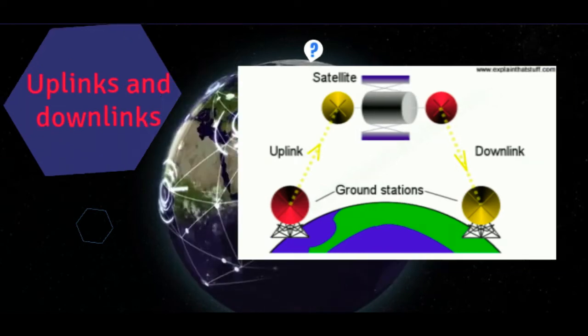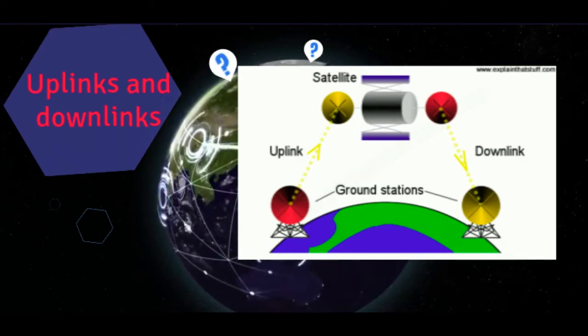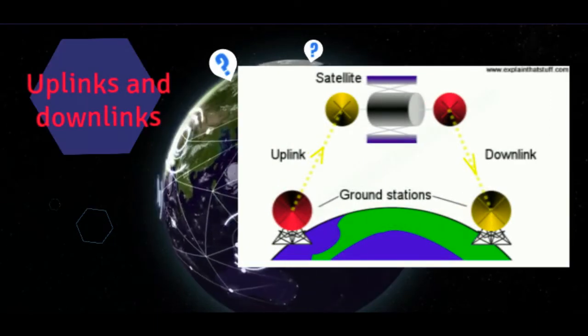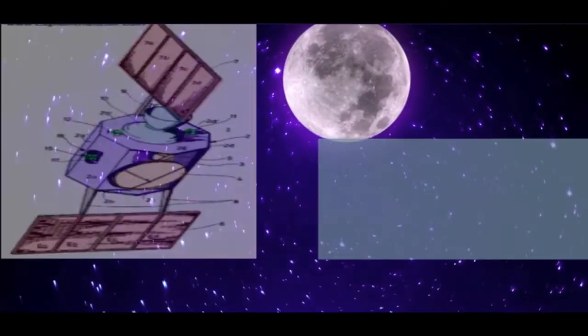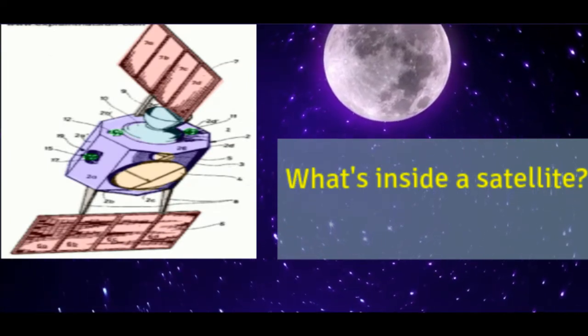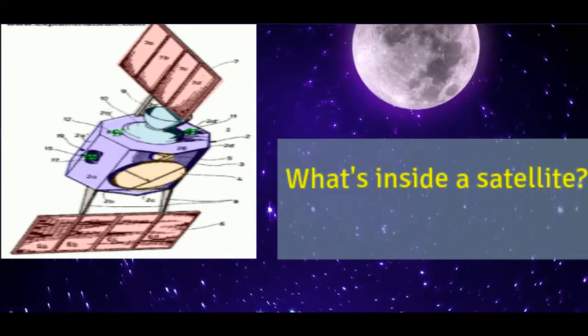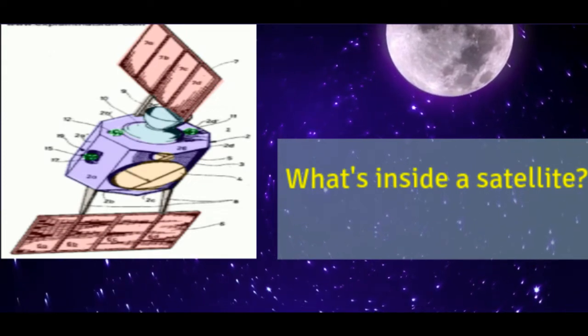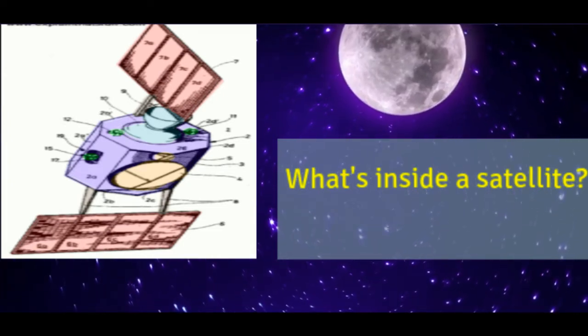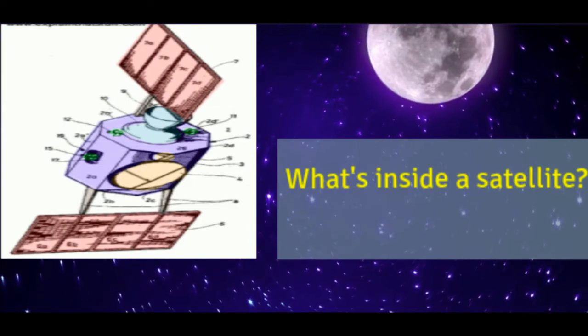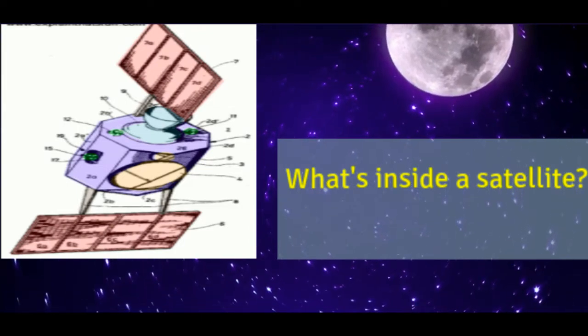What's inside a satellite? Looking at the labeled parts of a typical communications satellite, the most interesting bits are the fold-out solar panels that power the satellite, the sending and receiving antennas that collect signals coming up from Earth and send them back down, and the motors and engines that keep the satellite in exactly the right position at all times.